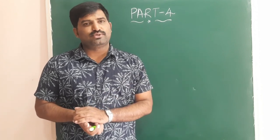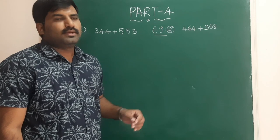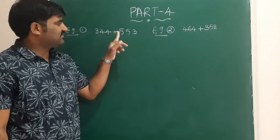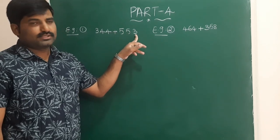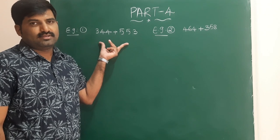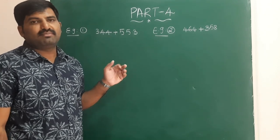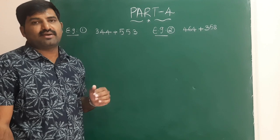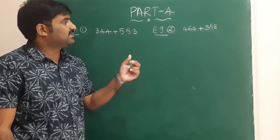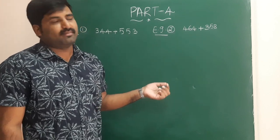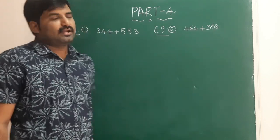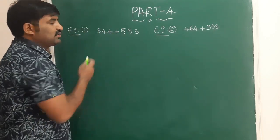Here we have two examples. The first example is 344 plus 553, which is related to non-carry numbers. Before going to every example, check whether the numbers involve carry or non-carry. The second example is related to carry numbers: 464 plus 358. I am going to add these two numbers using Vedic math.